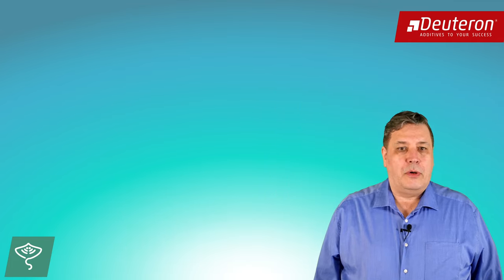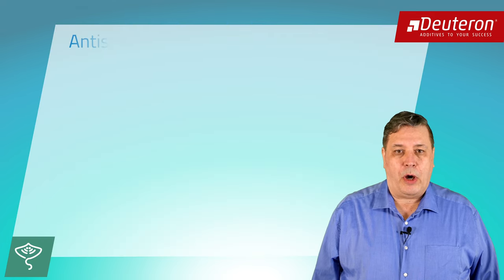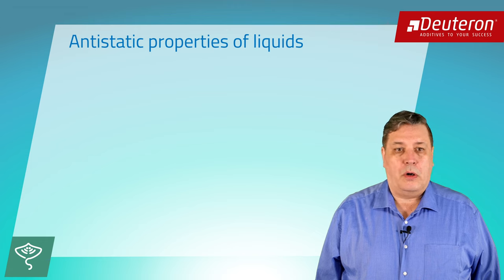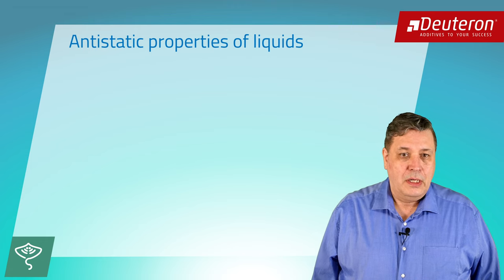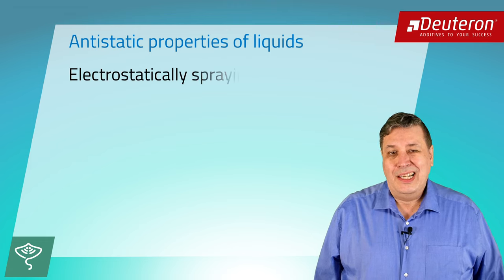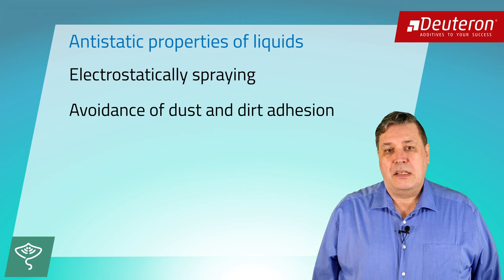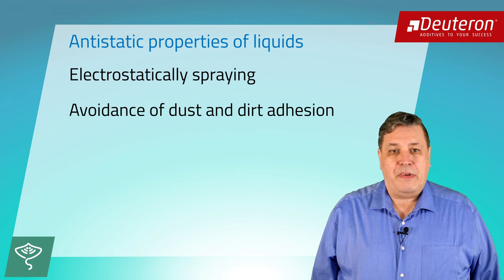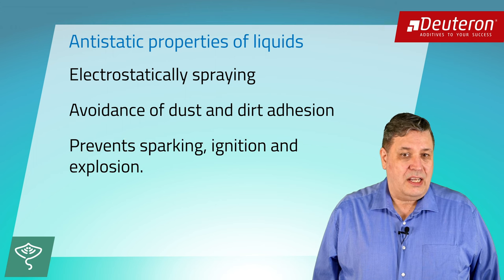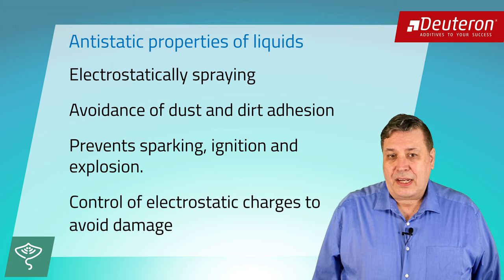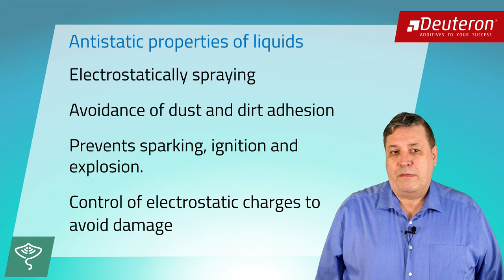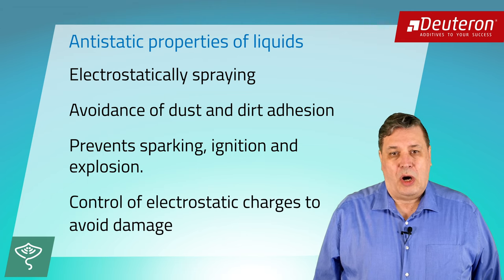In principle, there are two main reasons for adjusting the conductivity. First, anti-static properties of liquids or of the finished coatings. This can be important for electrostatically spraying, avoidance of dust and dirt adhesion, preventing sparking, ignition and explosions, and control of electrostatic charges to avoid damage of electronic components.